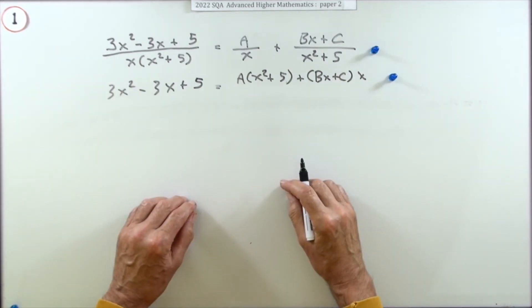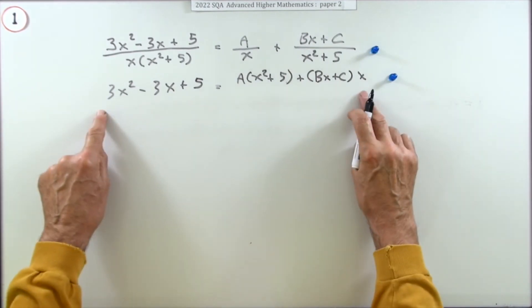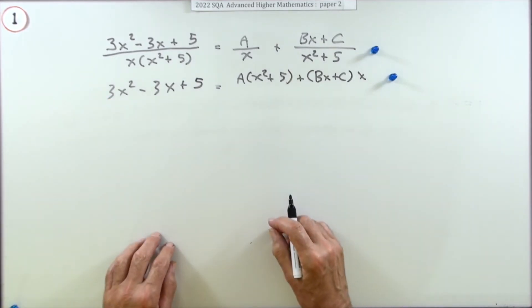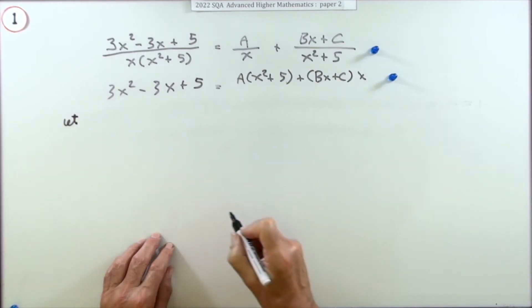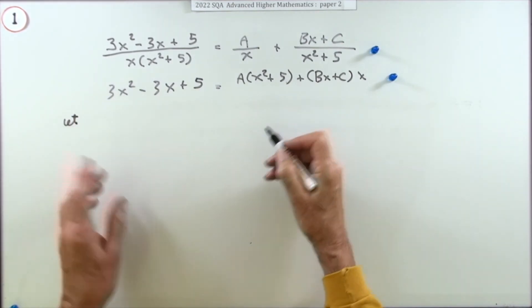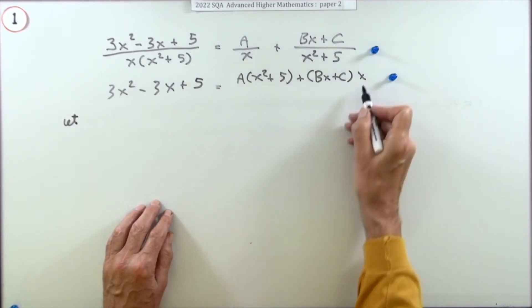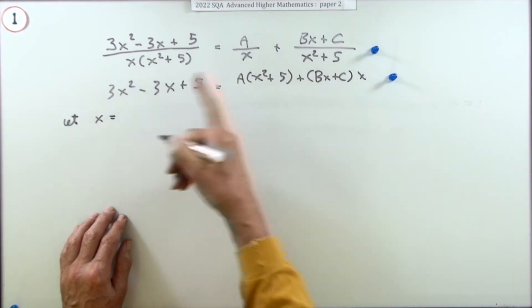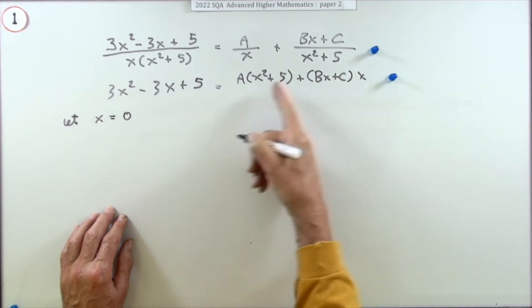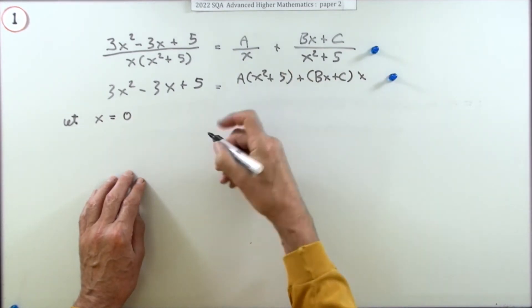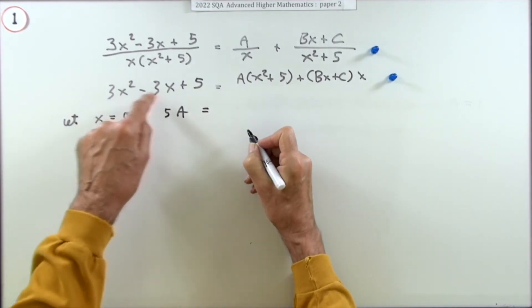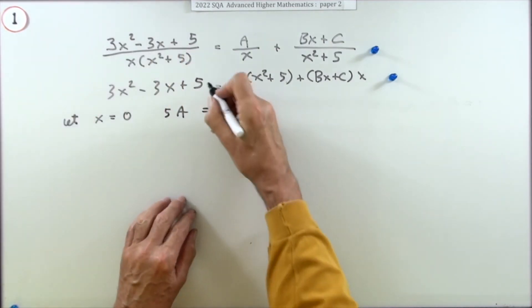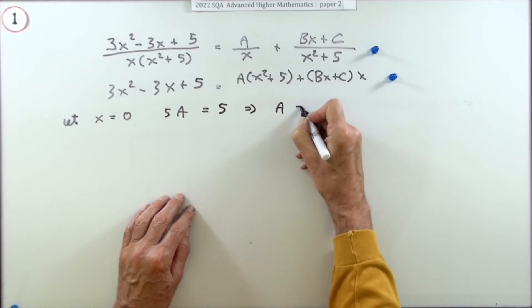An alternative way is to substitute values. Since these two expressions are identical, they give the same result for any value of x. Choose a convenient value: if x equals 0, that knocks out the A·x term, leaving just 5A. That's a knockout value. On the right-hand side, with x equals 0, you can just look at the constant term — 5A equals 5, so A equals 1 straight away.